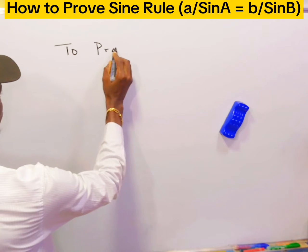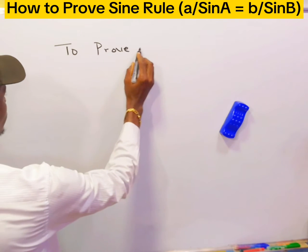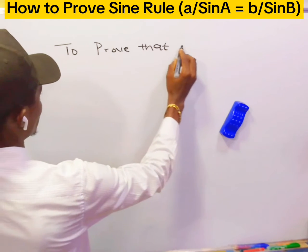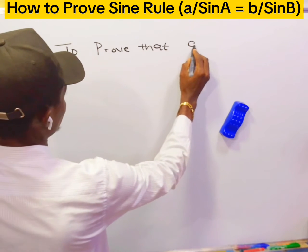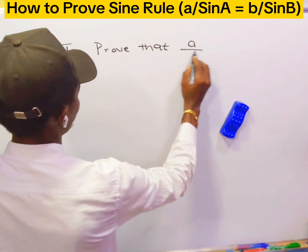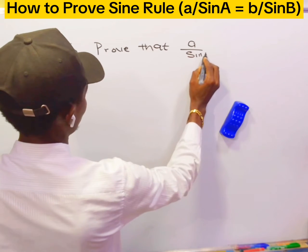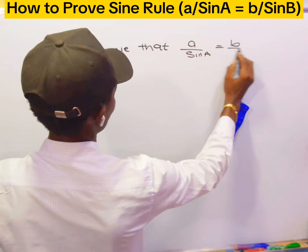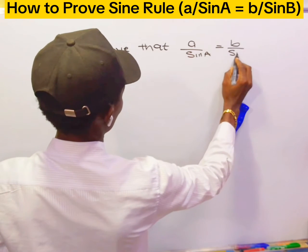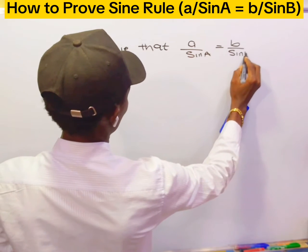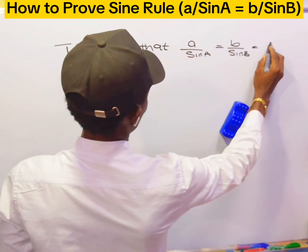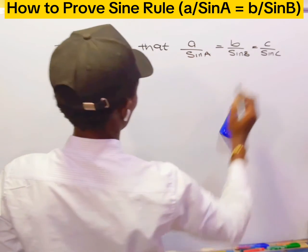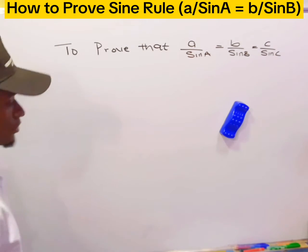To prove that a over sin A is equal to b over sin B equals c over sin C.